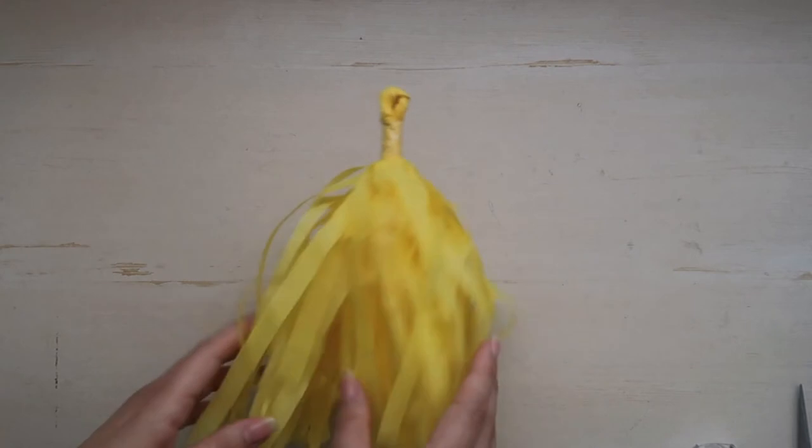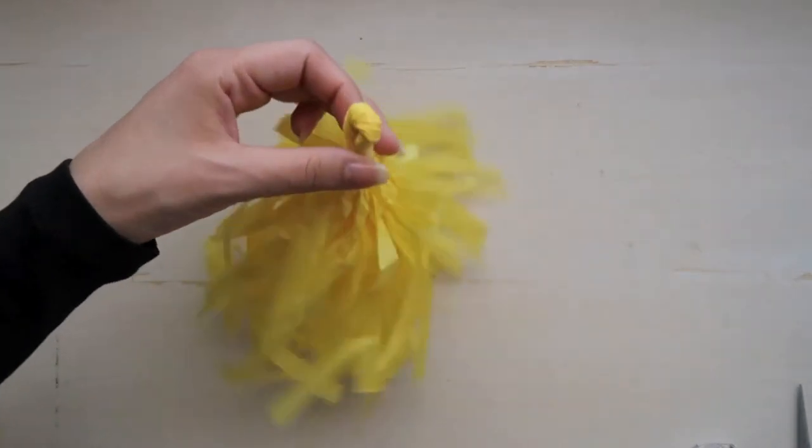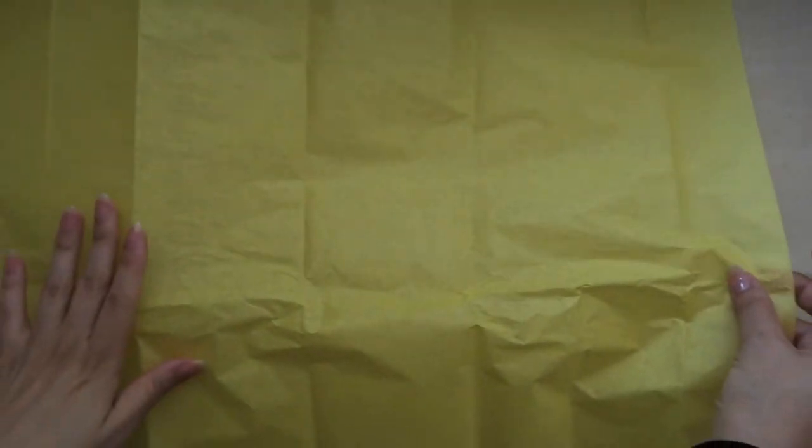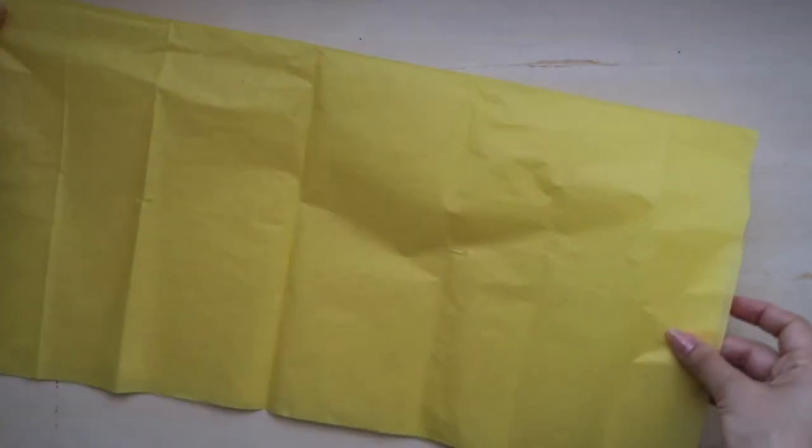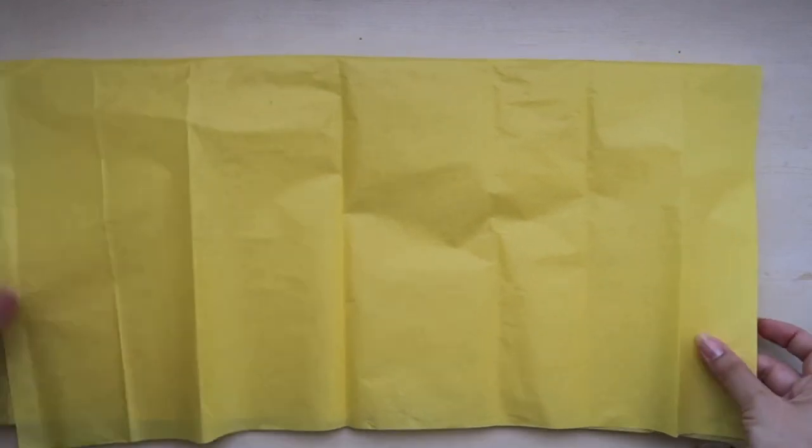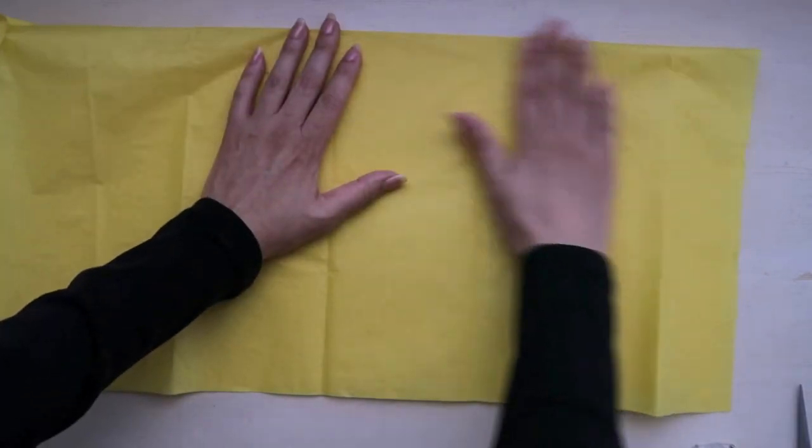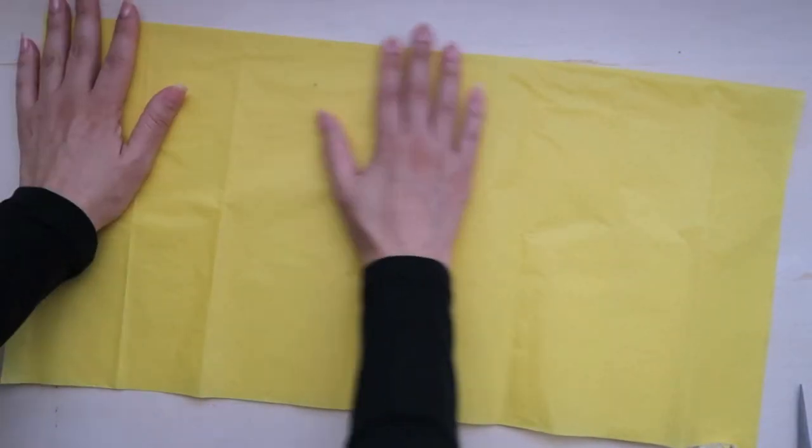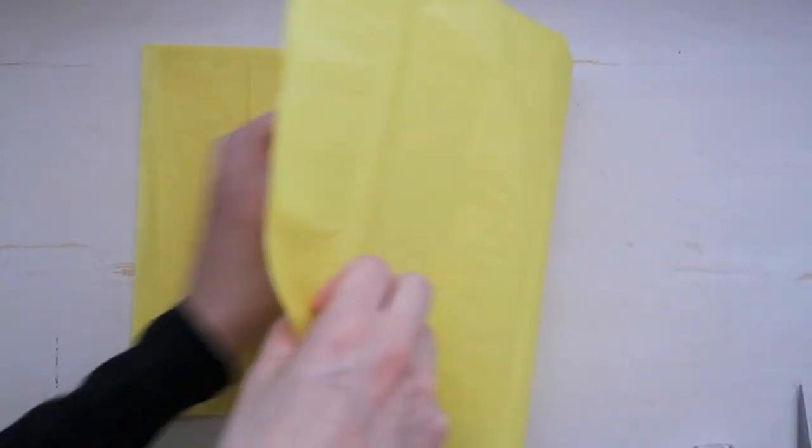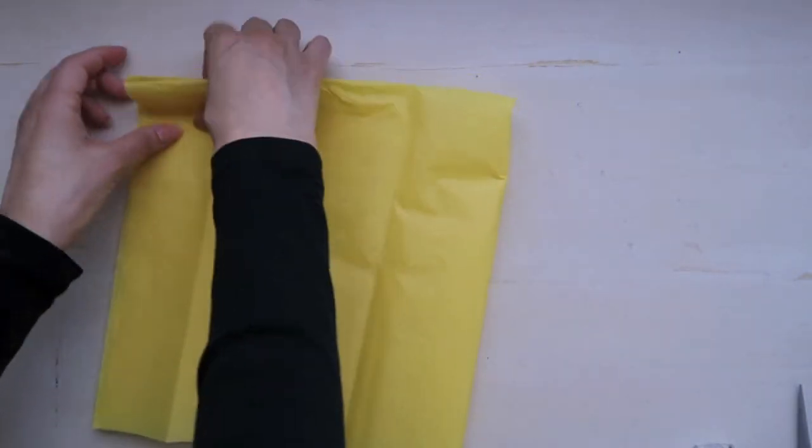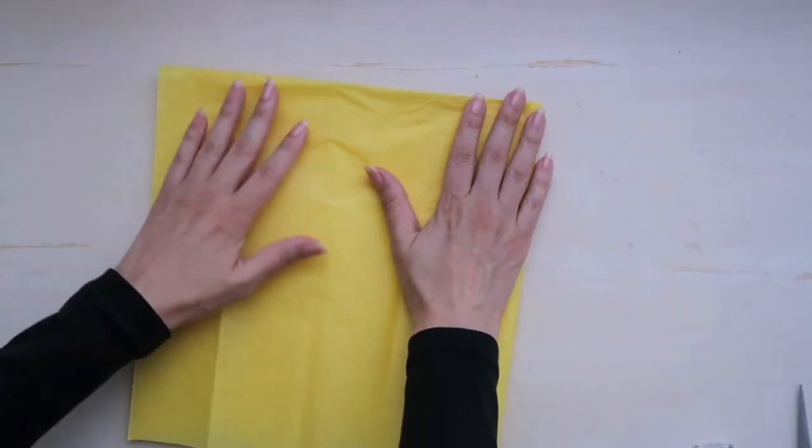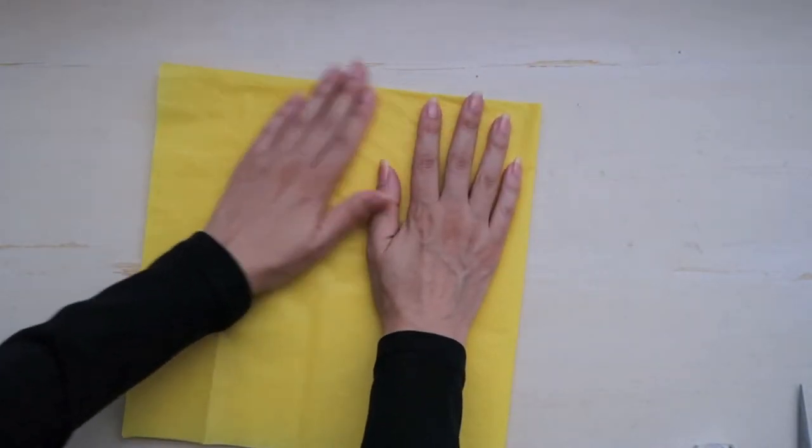I will now show you how we did the tassel banners. Like this. You will need one sheet of tissue paper. Fold it in half this way. Try to align the corners. Fold it in half again this way. You have formed a square.